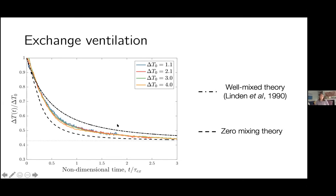That doesn't quite happen — it's not mixing perfectly. So here is a second theory I came up with, the 'zero mixing theory,' where any fluid coming through the window immediately sinks to the bottom of the room and fills up a layer. Neither of these is exactly right — they are two extremes — and my experiments sit quite nicely in between these two models, providing two limits on what you'd expect to see.